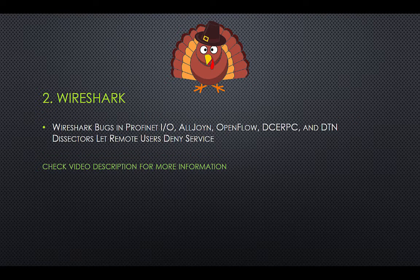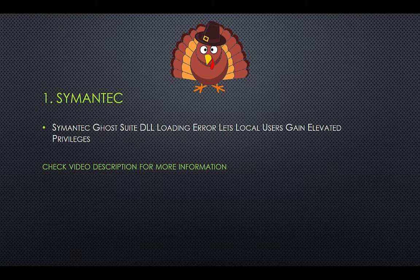Number 2: Wireshark. Wireshark bug in Profinet IO, AllJoyn, OpenFlow, DCERPC, and DTN Dissectors lets remote users deny service. Semantic GhostSuite DLL loading error lets local users gain elevated privileges.